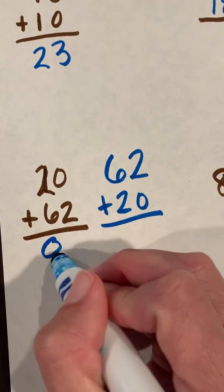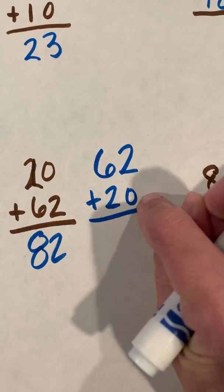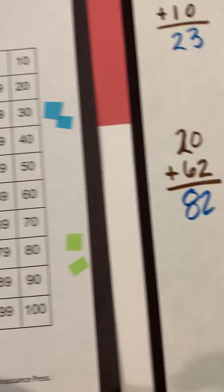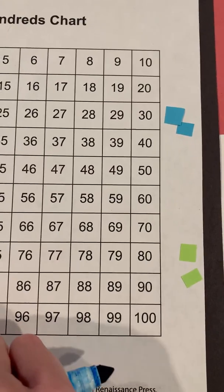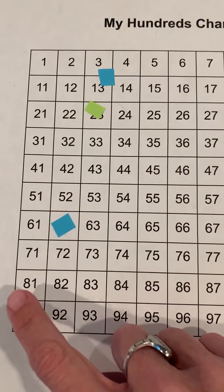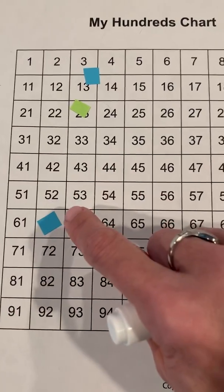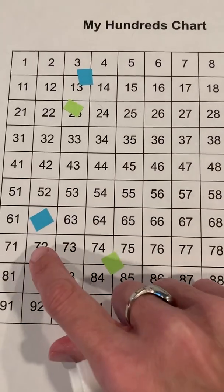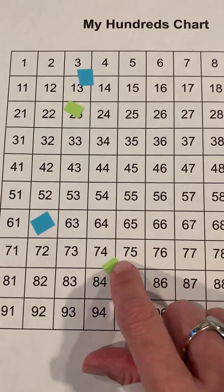So 20 plus 62 or 62 plus 20 is 82. Let's just check ourselves. If I am at 62 right here, and I'm going to add on two tens. Remember the pattern, just dropping down a level, plus 10, plus 20 would give me 82.